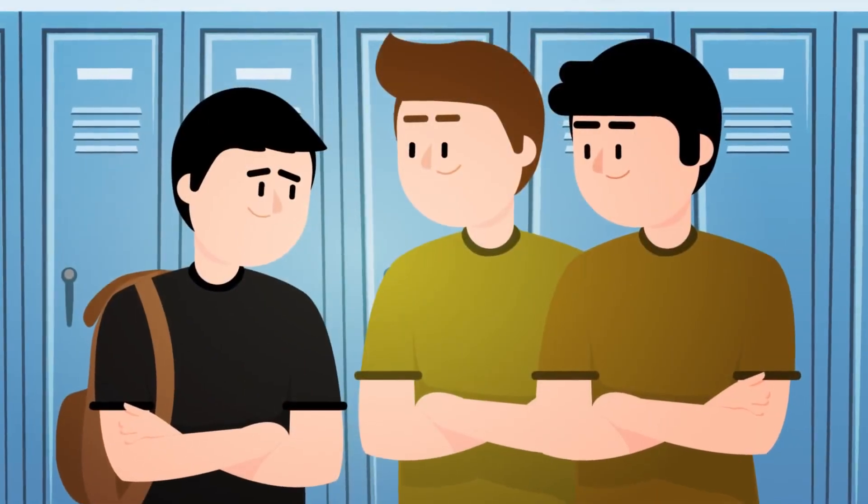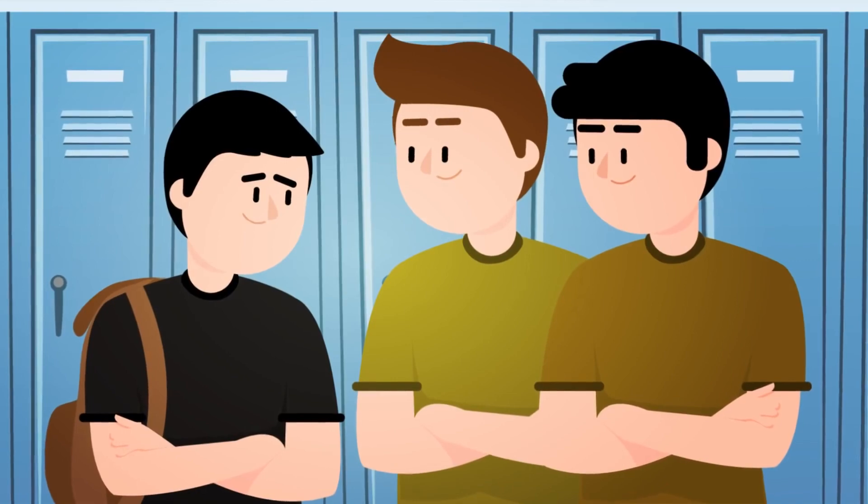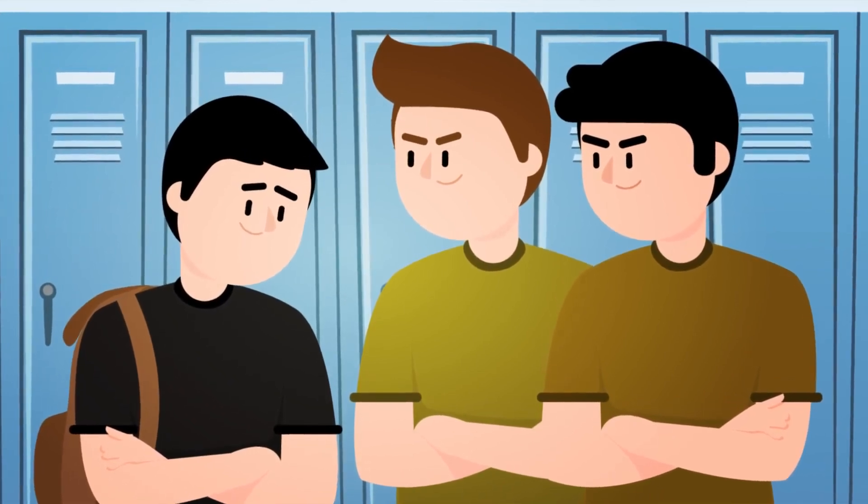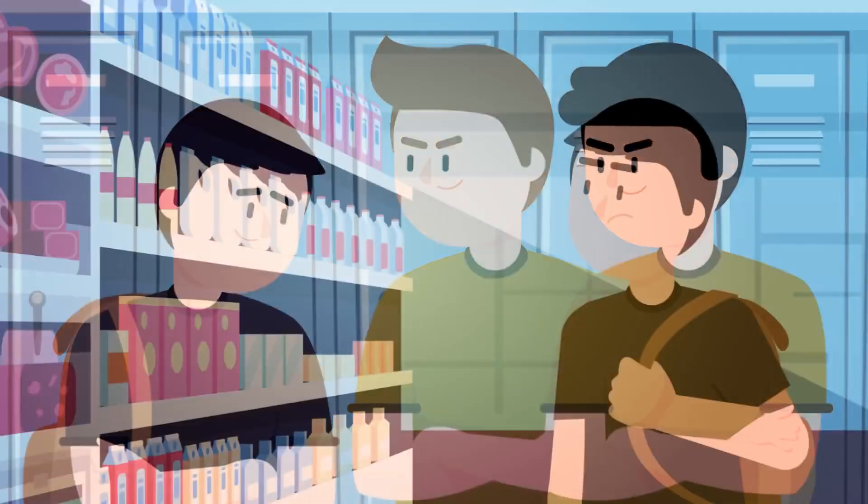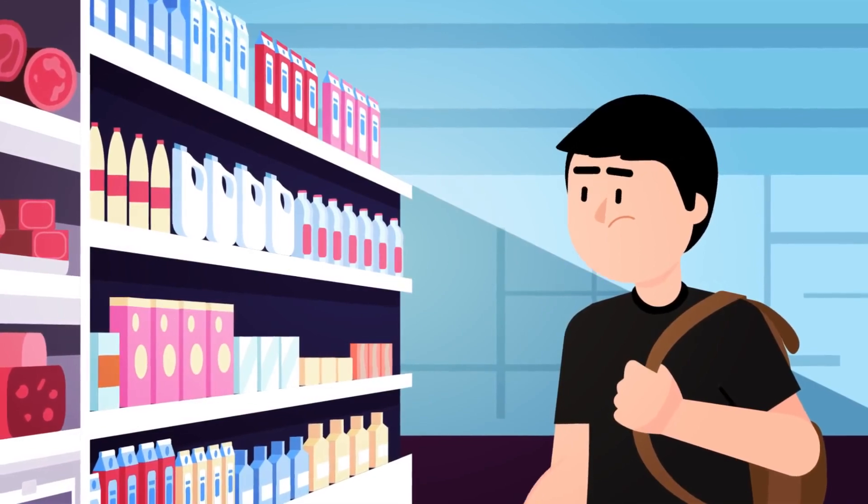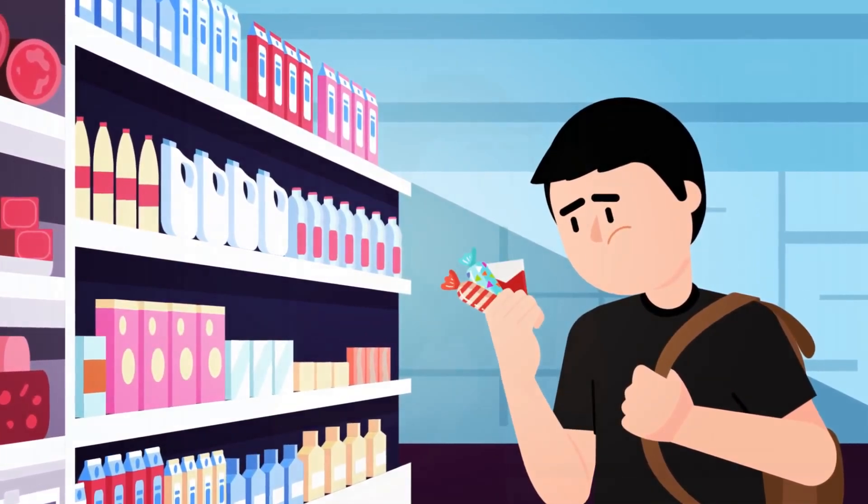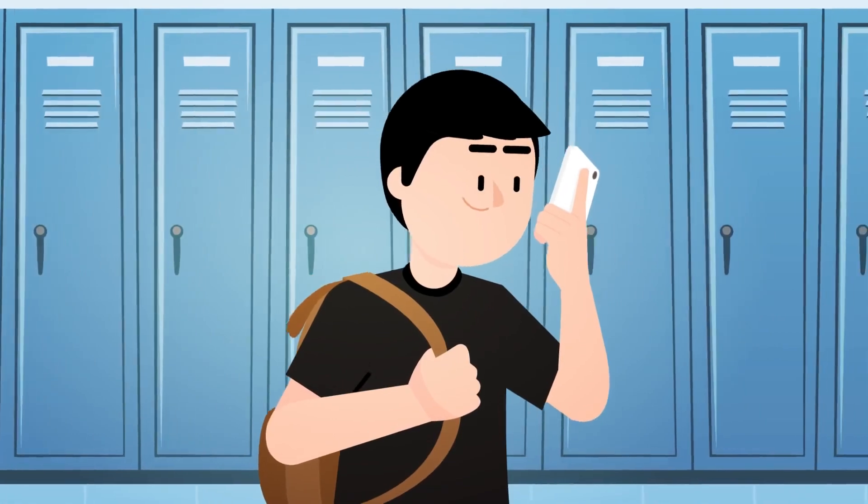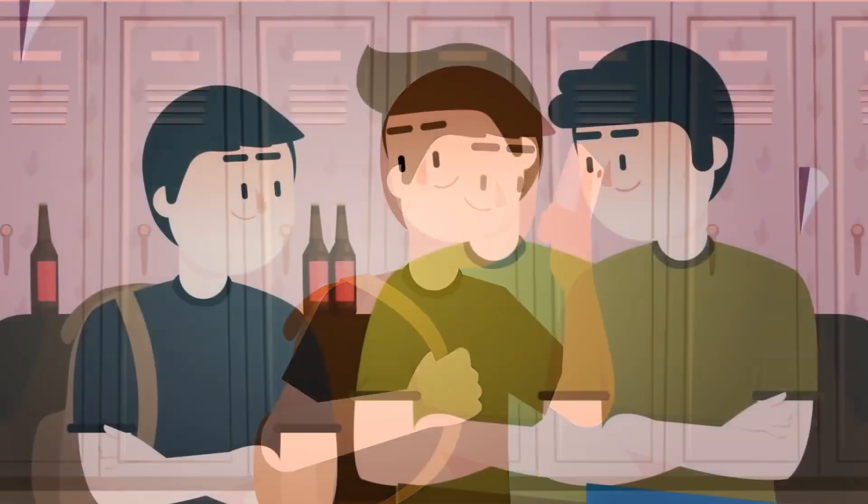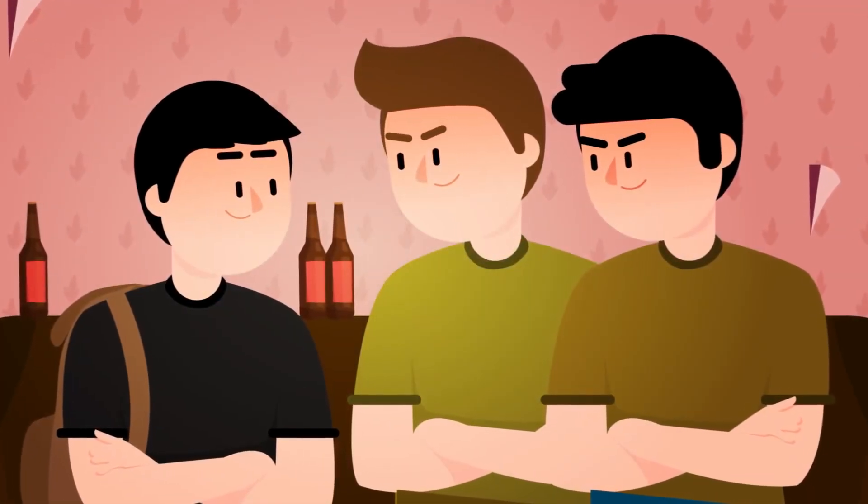David found himself wanting to hang out with the older kids at school because he saw them as the father figure that he didn't have. But unfortunately, they would pressure him to do bad things like steal candy or steal cigarettes. And they would encourage him to skip school and party with them instead. His life was slowly heading in the wrong direction.